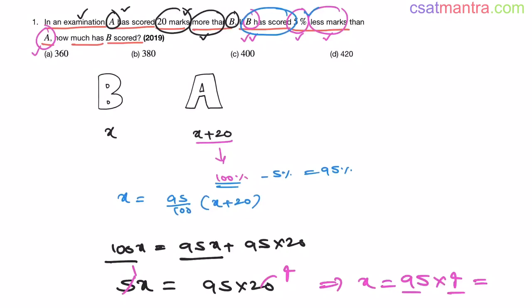4 nines are 360. 4 fives are 20. 360 plus 20. That is 380. So, marks scored by B, that is X, that is equal to 380. So our answer is B.